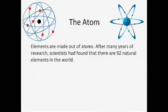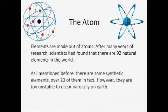Elements are made out of atoms. After many years of research, scientists have found that there are 92 natural elements in the world. As I mentioned before, there are some synthetic elements, over 20 of them in fact. However, they are too unstable to occur naturally on Earth.